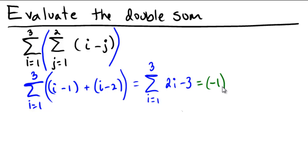Then we would replace i with 2. 2 times 2 is 4, 4 minus 3 is positive 1. And then we would replace i with 3, which would now be 2 times 3 is 6, minus 3 is 3. And then we would add those together.